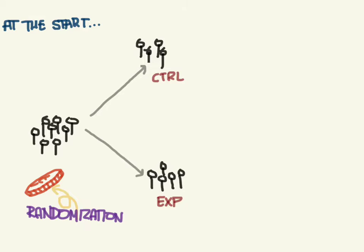The best way to achieve that balance is through randomization. There's no way you'd be able to pick and choose on your own and put people in those groups, because you're going to miss something. You might not notice that you were supposed to look at smoking and end up with a lot of smokers in one group compared to another. So randomization is key, but sometimes alone it will not work.